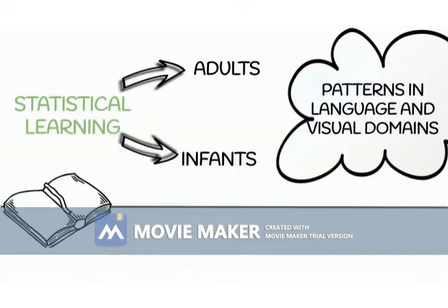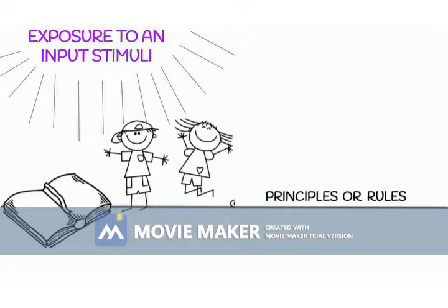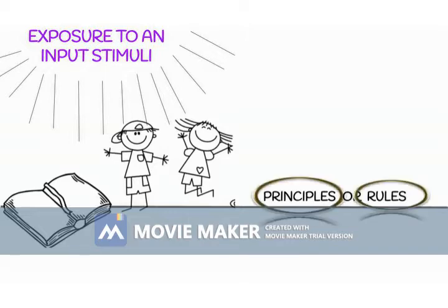Statistical learning is a mechanism that enables adults and infants to extract patterns embedded in language and visual domains. It operates implicitly without instruction through exposure to input stimuli. However, much of what learners must learn about a structured domain consists of principles or rules that can be applied to novel inputs.